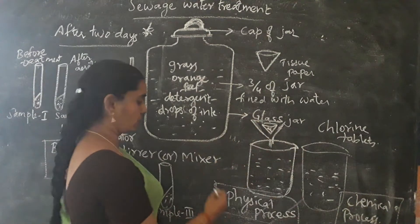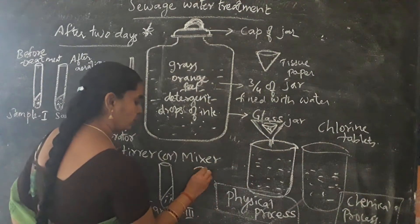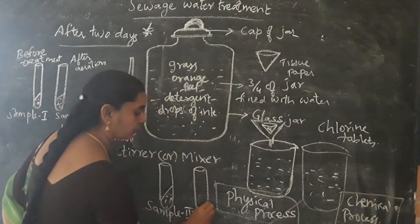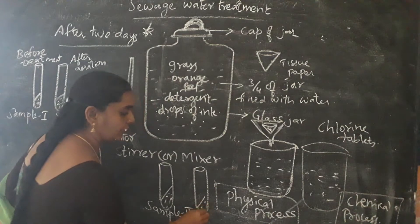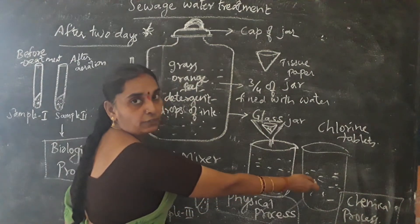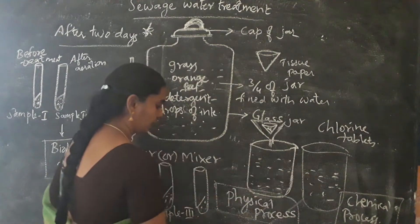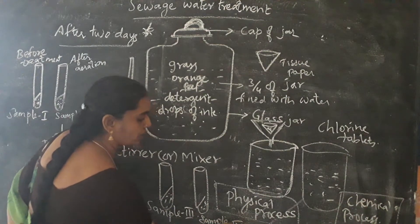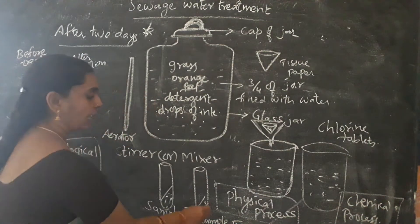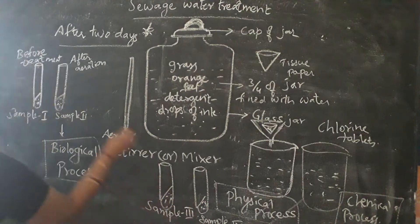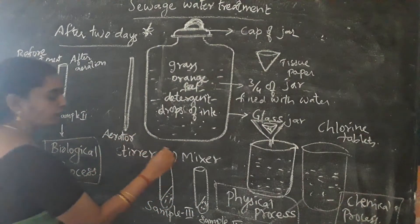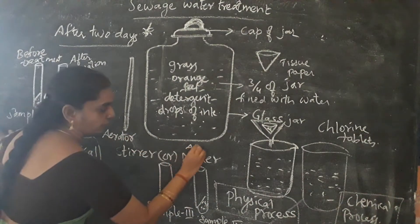Coming to the chemical process, add the chlorine tablet to the filtered water to form Sample 4. Now observe all the samples and get clarity on how the water was before treatment and how it was after treatment.